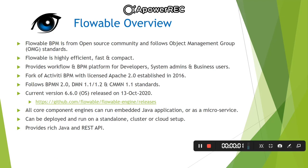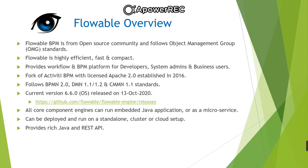Let's move on to the overview of open source Flowable BPM. Flowable BPM is from the open source community and follows the OMG standards, though it comes with an enterprise edition with additional features along with a licensed version. It is a fully open source, lightweight and flexible business process management suite, which is written in Java language.